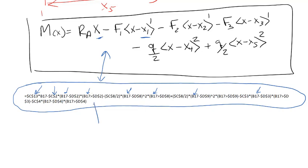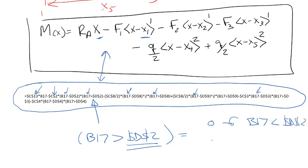The way you turn things on, you'll notice this little equation. It says B17 greater than D2. And so the D2 is the location where the force is located. And this term is equal to 0 for B17 less than D2, and it's equal to 1 for B17 greater than D2.